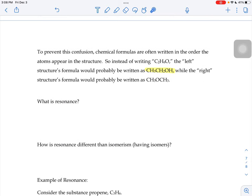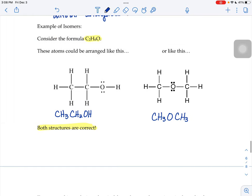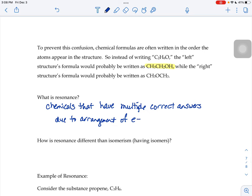One last vocab word: Resonance. Resonance is when you have chemicals that have multiple correct answers due to the arrangement of their electrons. So this was a case where you have multiple right answers. And this resonance idea is where there's going to be multiple correct answers.